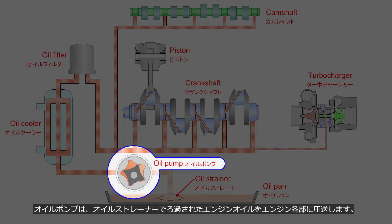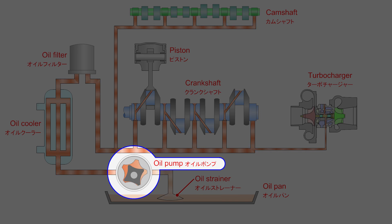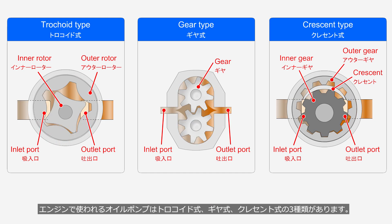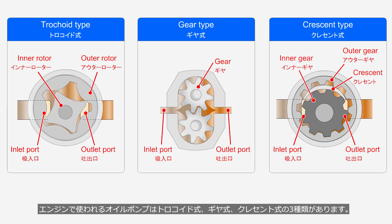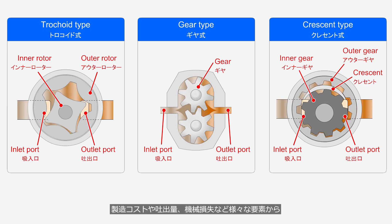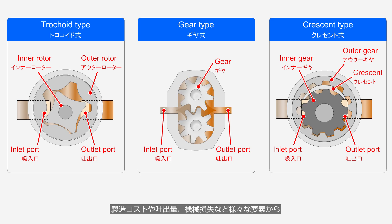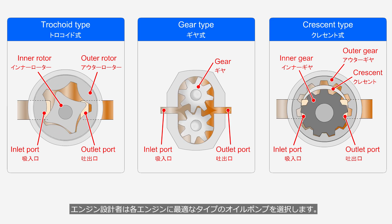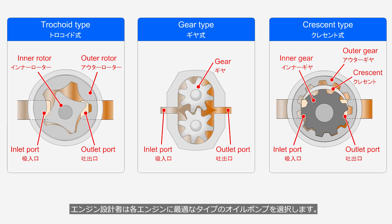The oil pump pressurizes and delivers the engine oil, which has been filtered by the oil strainer, to various parts of the engine. There are three types of oil pumps used in engines: trochoid type, gear type, and crescent type. Based on various factors such as manufacturing cost, discharge capacity, and mechanical losses, engine designers select the most suitable type of oil pump for each engine.